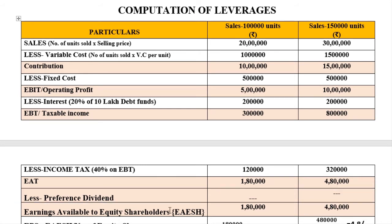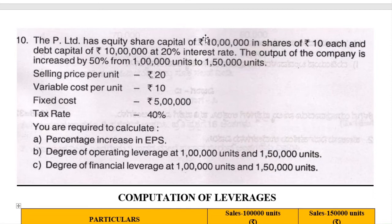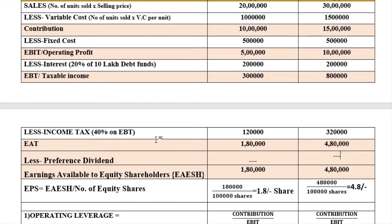Now we get EAESH — earnings available to equity shareholders. Case 1: rupees 1 lakh 80,000; Case 2: rupees 4 lakh 80,000. Number of equity shares is 1 lakh (equity capital 10 lakh divided by rupees 10 per share). EPS equals EAESH divided by number of equity shares. Case 1: 1 lakh 80,000 divided by 1 lakh shares equals rupees 1.80 per share. Case 2: 4 lakh 80,000 divided by 1 lakh shares equals rupees 4.80 per share.